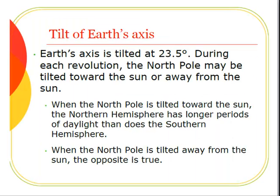Earth's axis is tilted at 23 and a half degrees. During each revolution, the North Pole may be tilted toward the Sun or away from the Sun. When the North Pole is tilted toward the Sun, the Northern Hemisphere has longer periods of daylight than does the Southern Hemisphere. When the North Pole is tilted away from the Sun, the opposite is true.